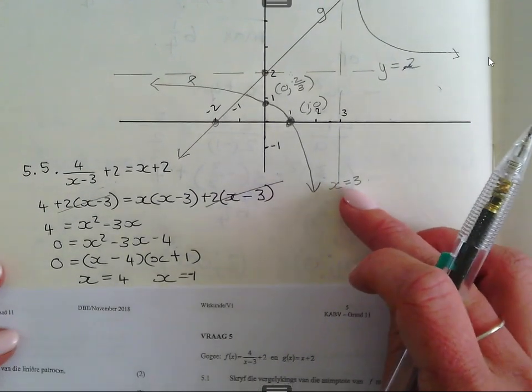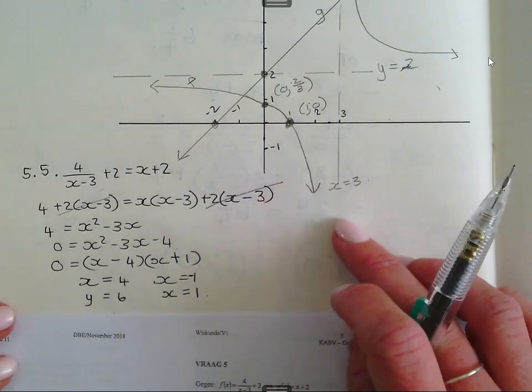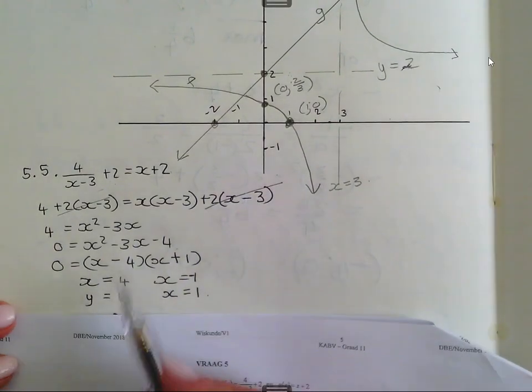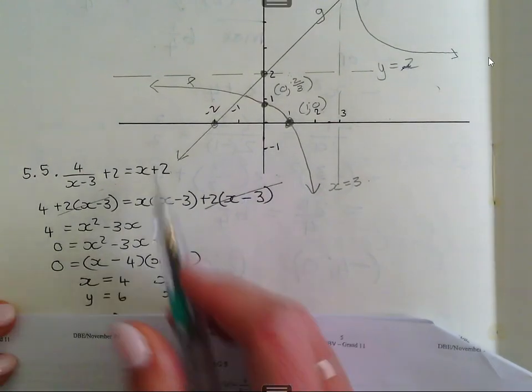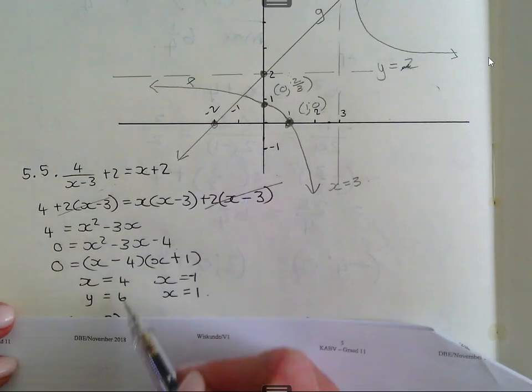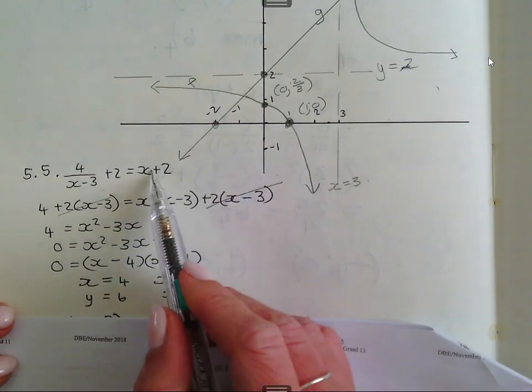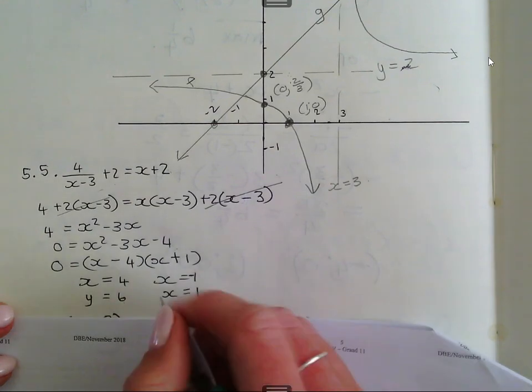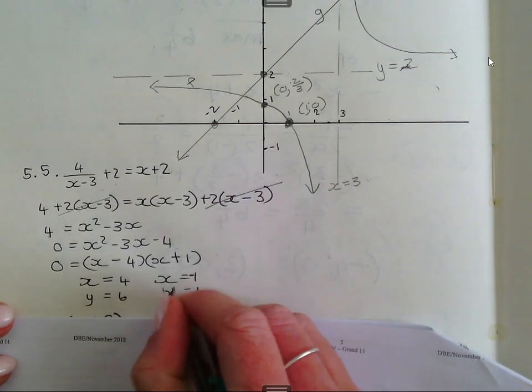Jy hoef nie die x woordes te gegeet, maar ek het die y woordes ook gaan uitwerk. Het is moos nou makkelijk, as jy die antwoord het van x, dan vervang jy om net in een van die vergelijtingsak die raagheidlijn gevat. 4 plus 2 is dan jou y is 6, en minus 1 plus 2 jou y is dan 1.